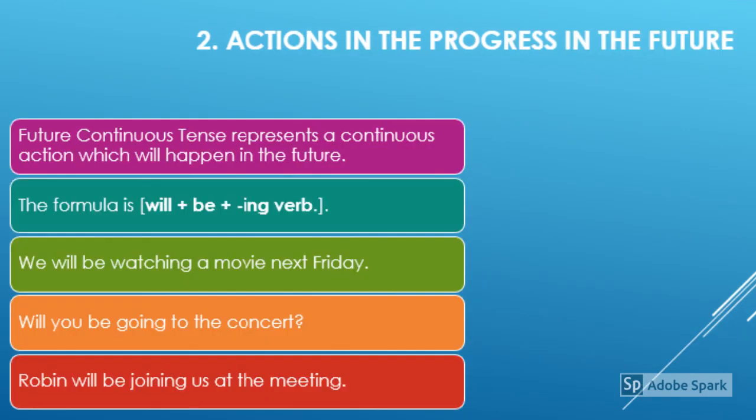Actions that will be continuing in a certain period in the future, or actions in progress in the future, are expressed through future continuous tense. The formula is will plus be plus ing verb. Look at the example sentences: We will be watching a movie next Friday. Will you be going to the concert? Robin will be joining us at the meeting. You can notice the pattern: will be watching, will be going, will be joining — these are continuous actions which will happen in the future.